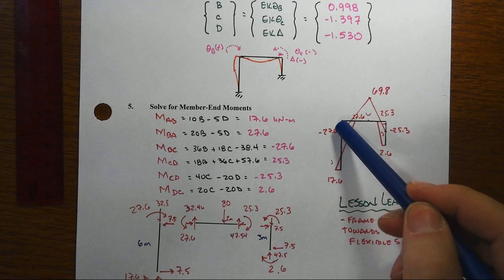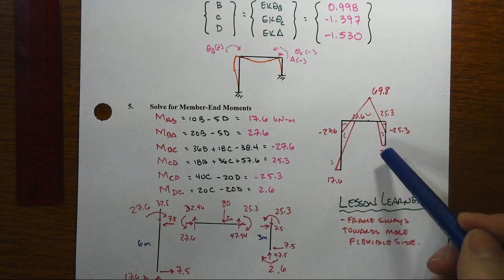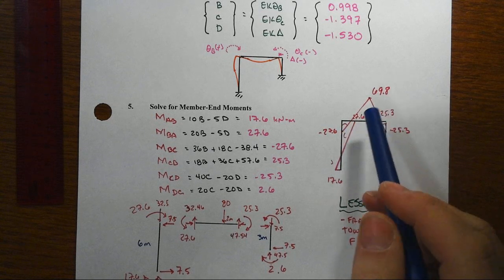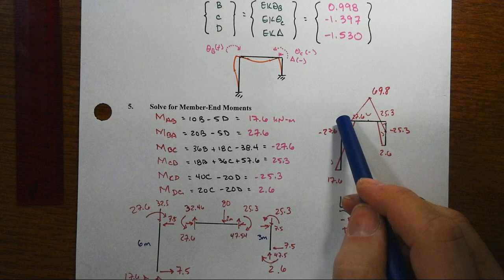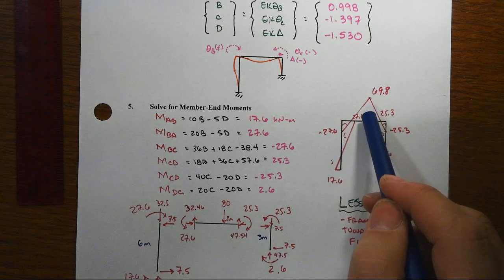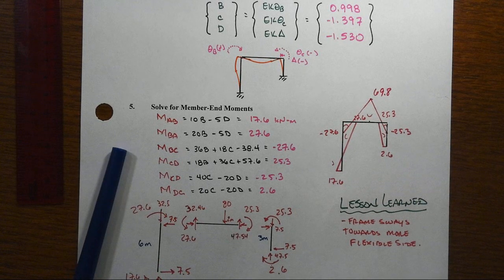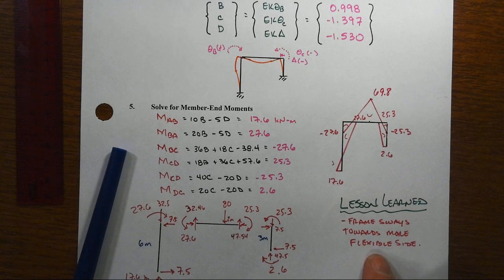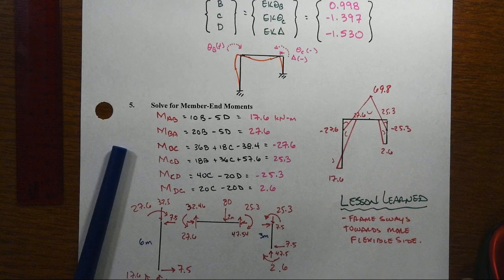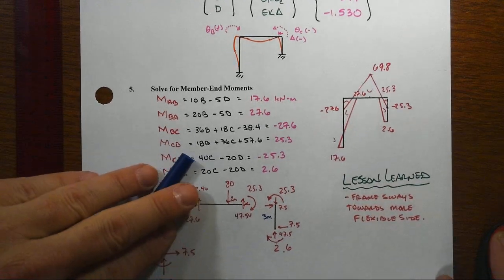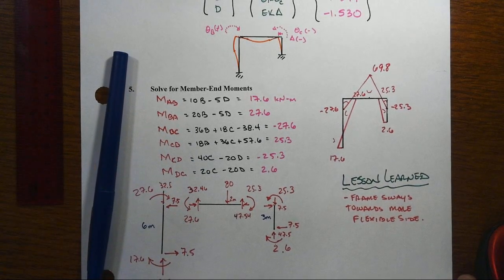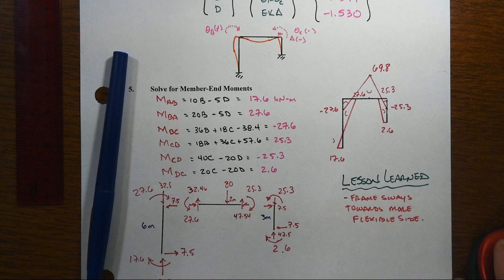If you decide to put the left-hand column the same height as the right-hand column, you're going to find that the structure will just slightly sway to the left with the load being placed slightly to the right. So that asymmetry and that notion of the frame swaying towards the more flexible side does seem to be generally a reasonable rule of thumb to take away from this.